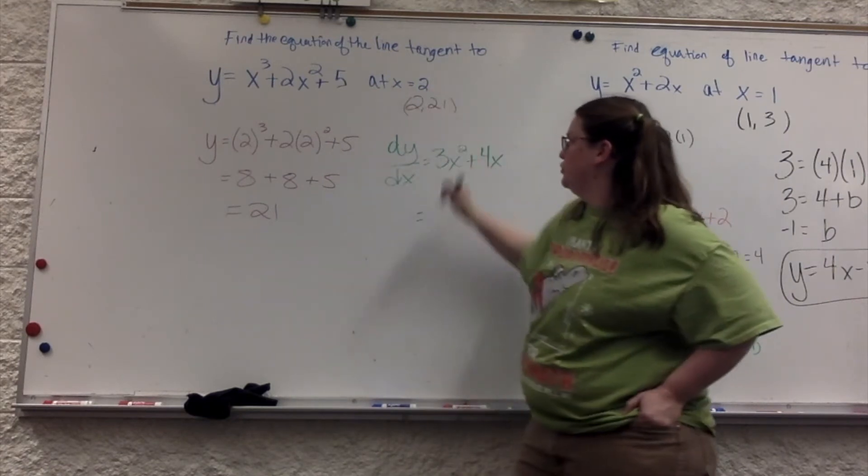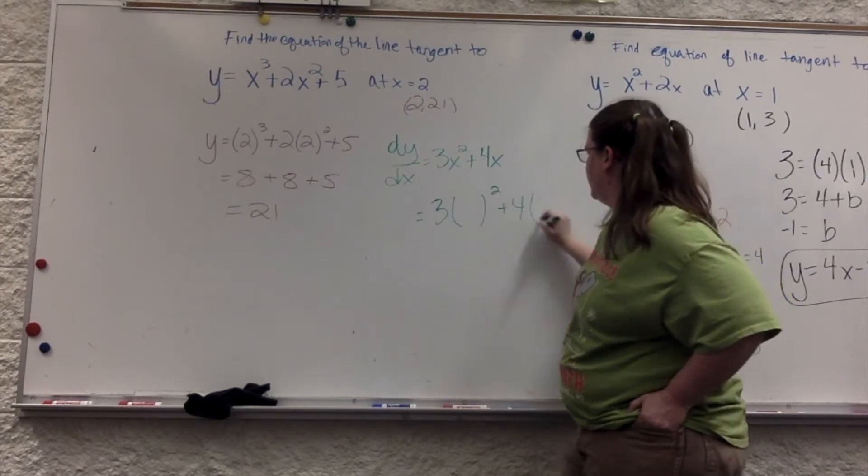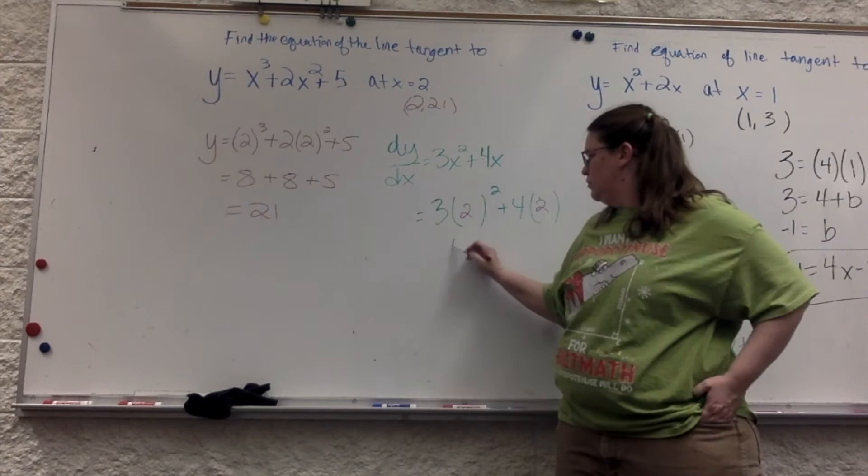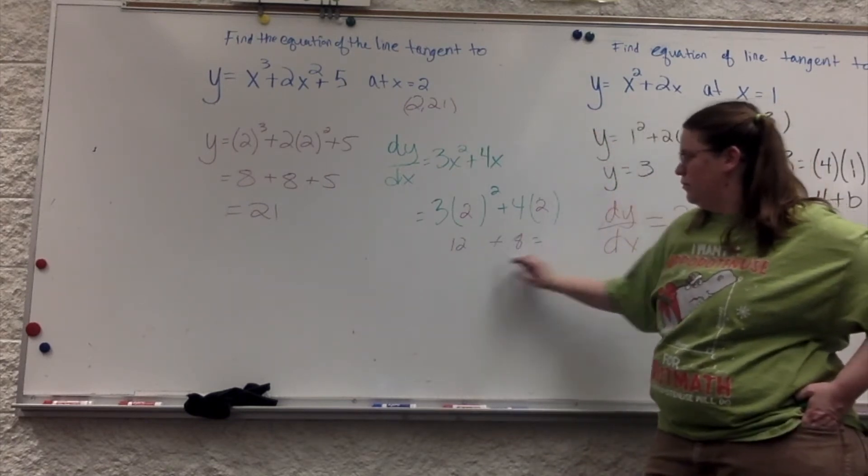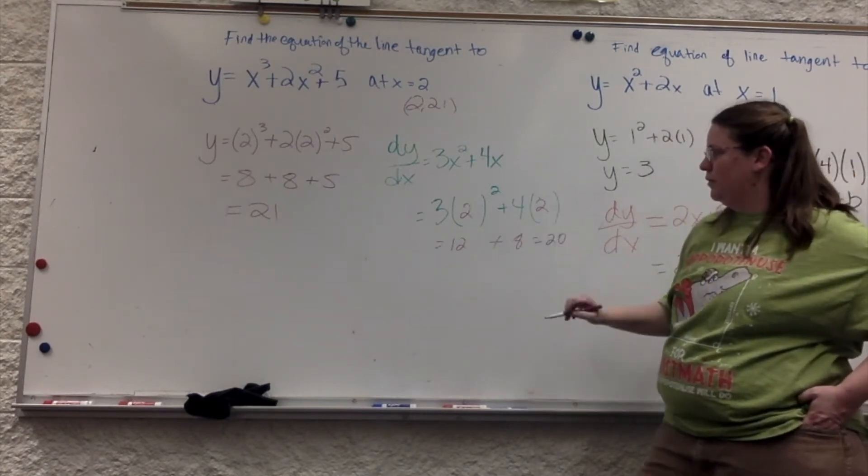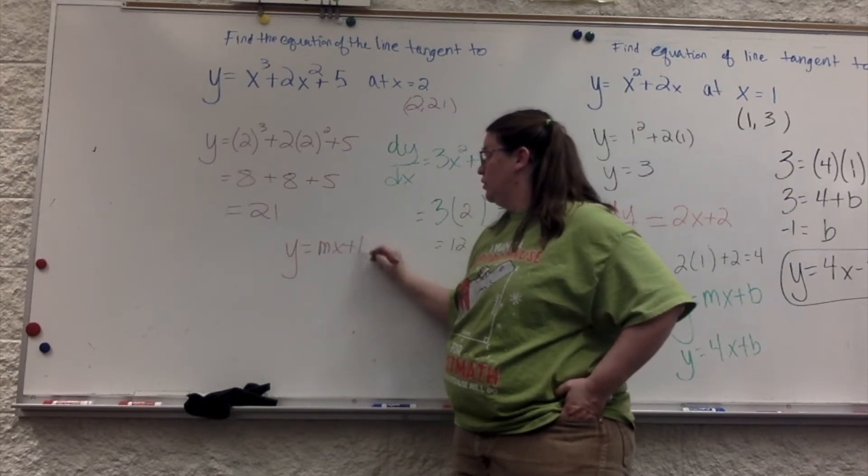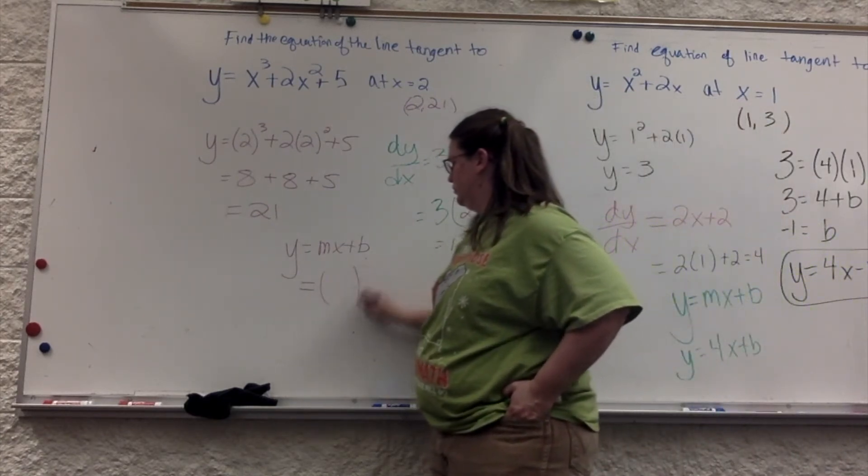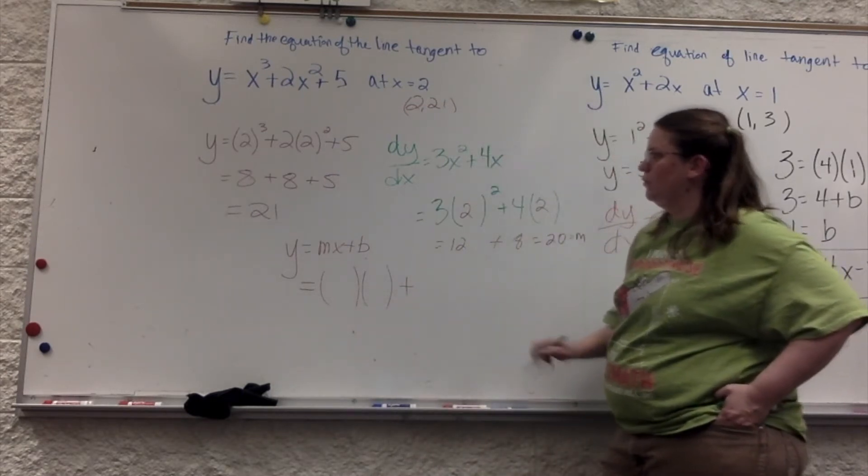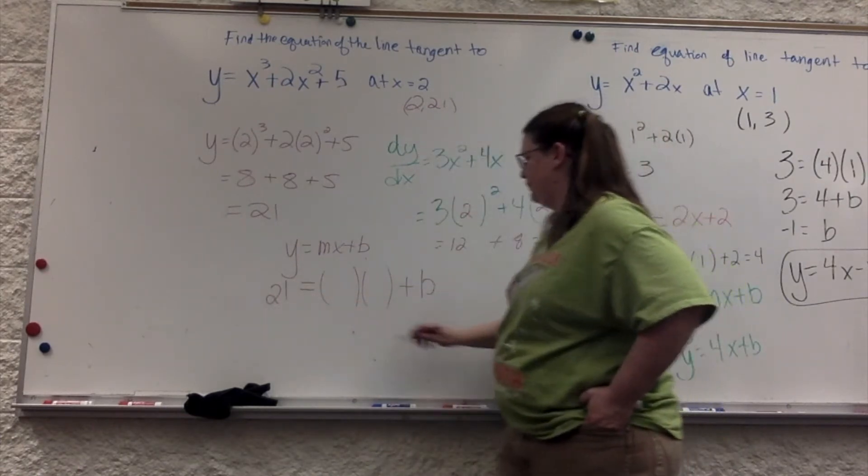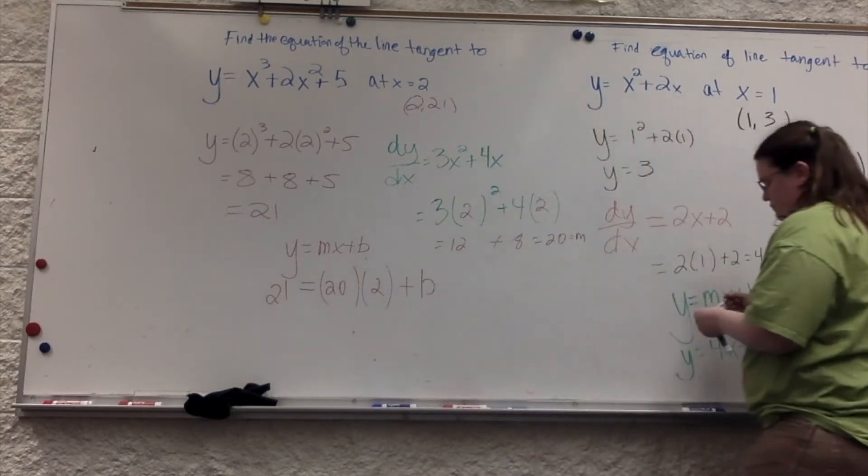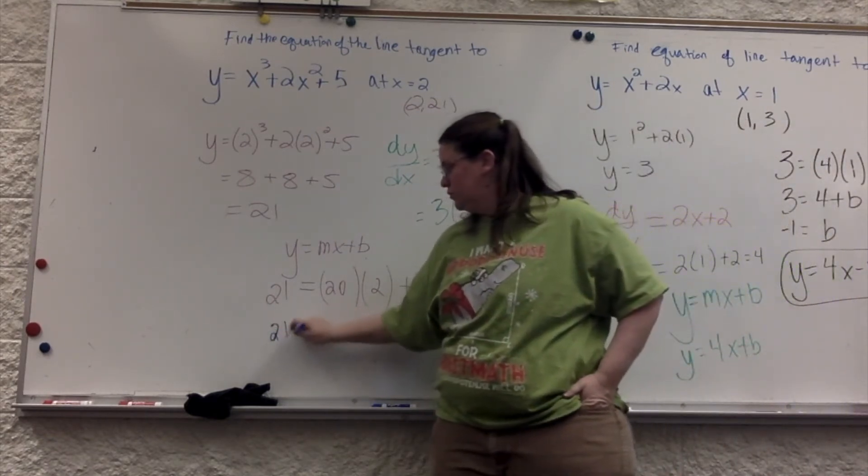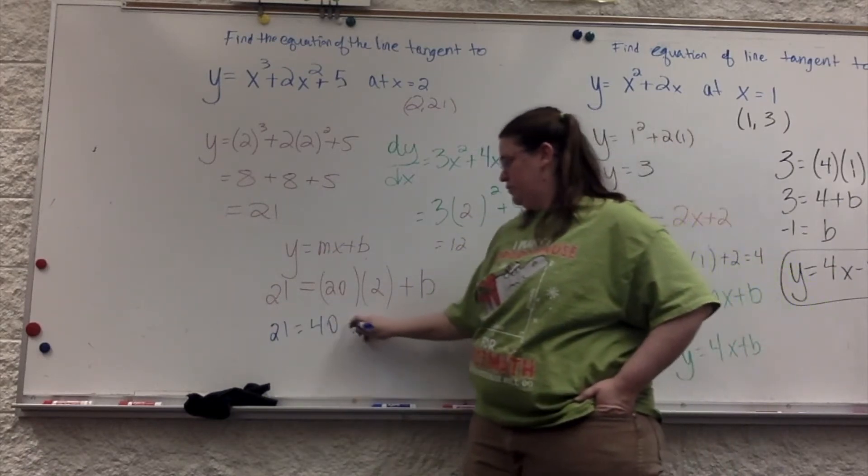Alright, plus 0. So there's the derivative. But at x equals 2, the slope is what? 12 plus 8 equals 20. Okay. That gives us our slope. That's the slope because we did the derivative.